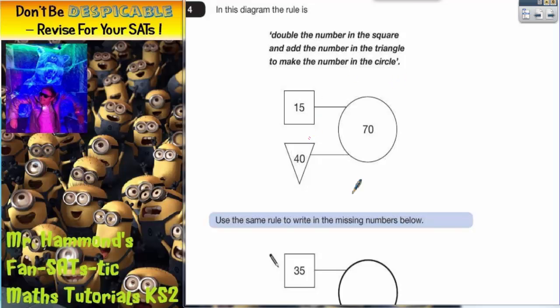So let's just test how it works. If we double this number in the square, we've got 15 times 2, that's going to give us 30. And then if we add the number in the triangle, 30 add 40 does indeed give us 70. So that's how it works.